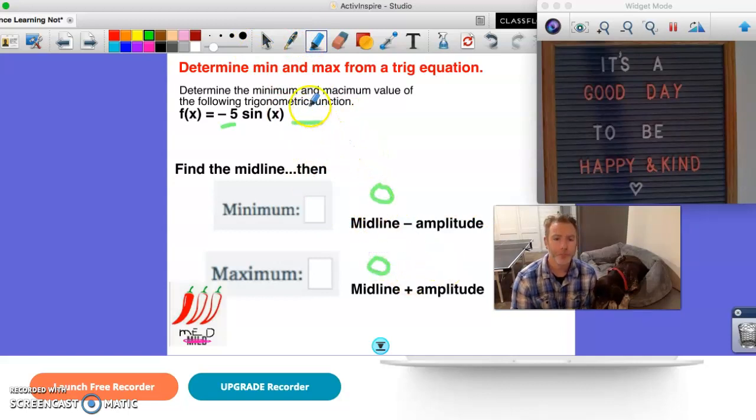This could be plus zero. So Y equals zero. Next thing is our amplitude. Amplitude is a distance from the midline to the maximum. And since distance is never negative, this amplitude is positive five. That's important to understand.